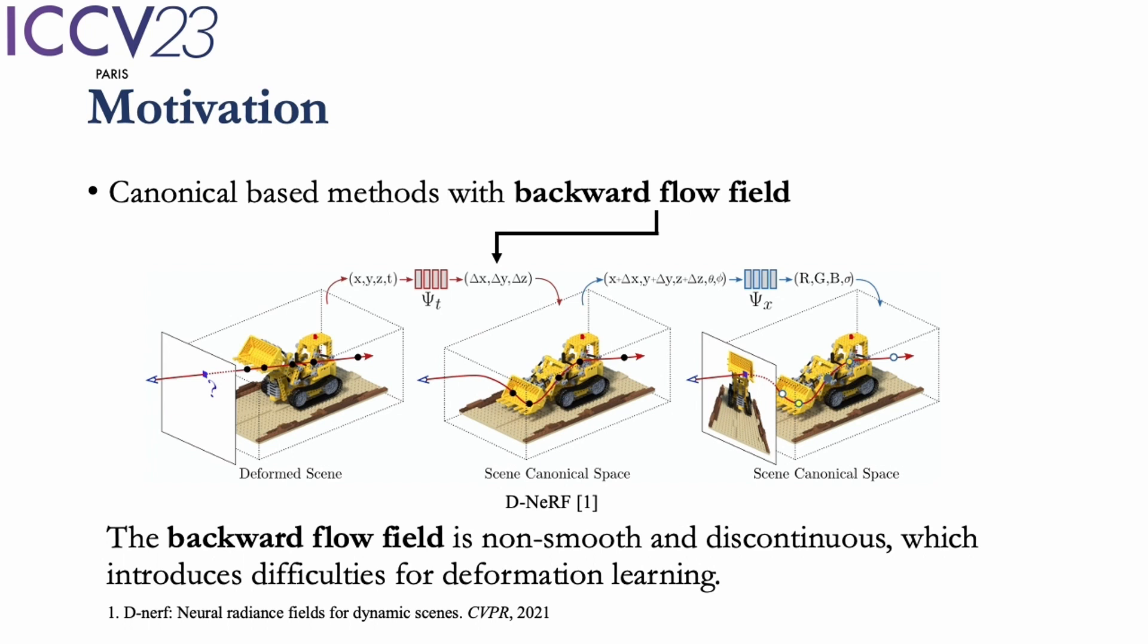To render images at other time steps, as shown in the left part of the figure, a backward flow field estimates flows which move the positions of the sample points on the ray from time t to canonical time. However, the problem of this scheme is that the backward flow field is not smooth and continuous, which is difficult to be perfectly fitted by smooth motion models.